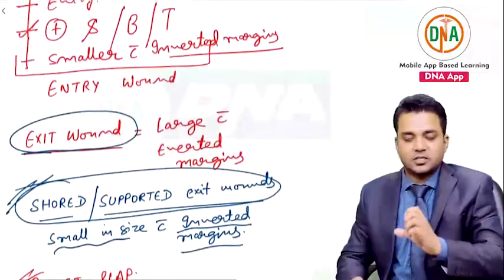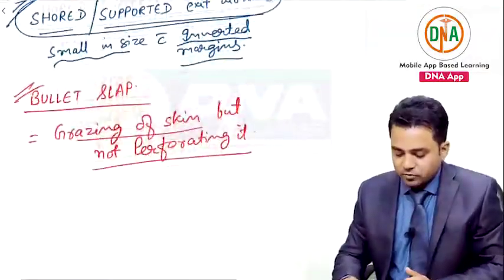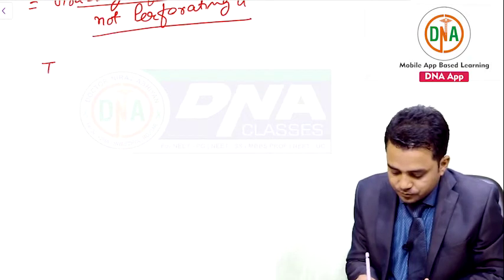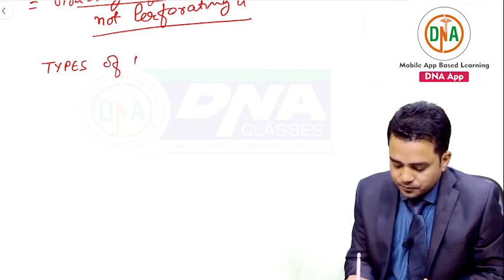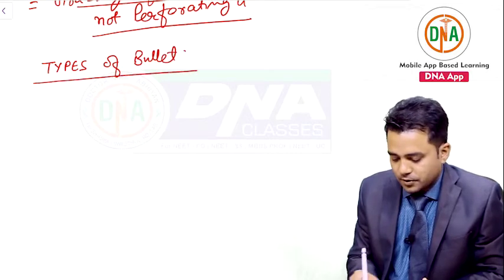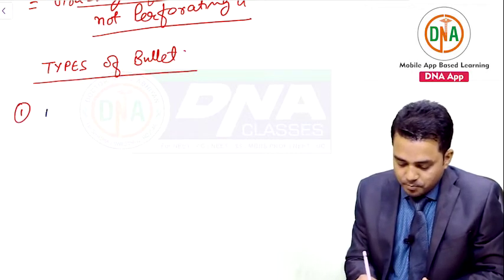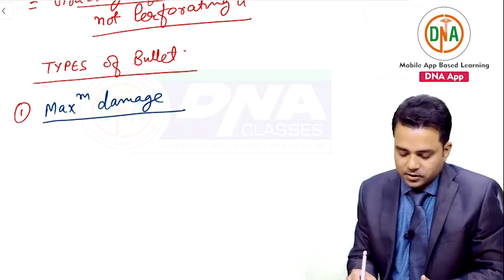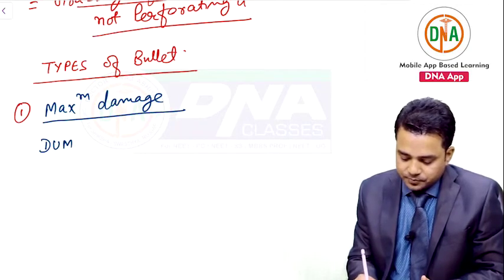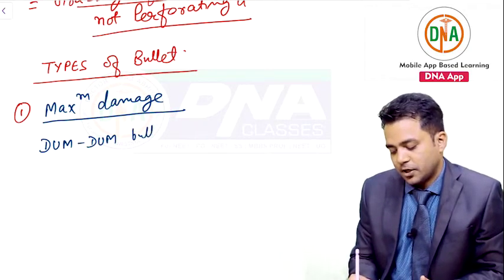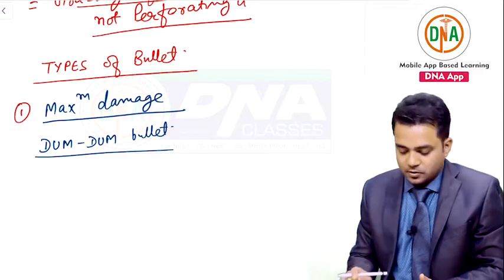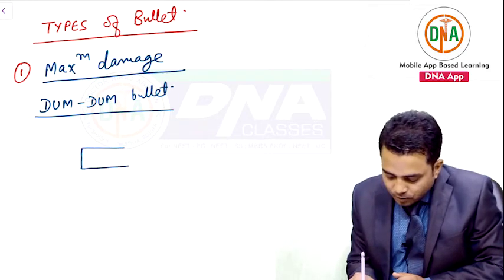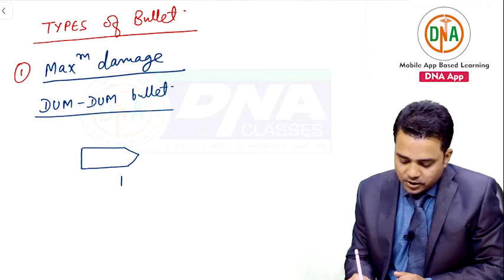Now let us see the types of bullets. Number one: maximum damage is caused by the dum-dum bullet. In a dum-dum bullet, the bullet is made up of lead with a copper jacket all around, because lead is a soft metal that melts easily.